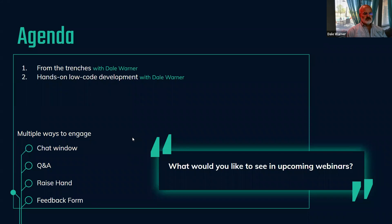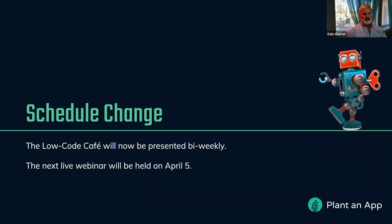Do engage with us — you can use the chat window, the Q&A, raise your hand to speak, and look for the feedback form in the links we send you. We'd be happy to hear your thoughts about what we can do in upcoming webinars. There is a schedule change: the Low Code Cafe is going to a bi-weekly schedule, so our next live webinar will be April 5th. We'll see you in two weeks.